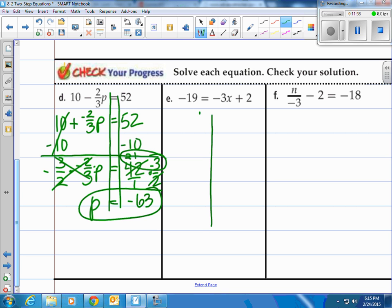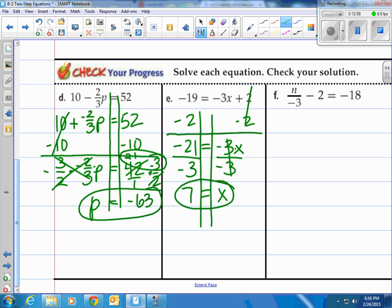How about this one? Got our train tracks. We're going to undo this by subtracting 2 first. And then we'll be left with negative 3x on the right side and negative 21 on the left side. And we divide by what's in front of the letter because that's the inverse operation of multiply. That's negative 3. That cancels down to x or 1x. And then negative 21 divided by negative 3 is 7. Two negatives make a positive when you're dividing. That does work.